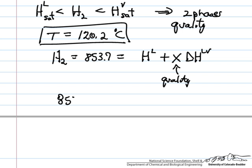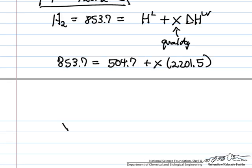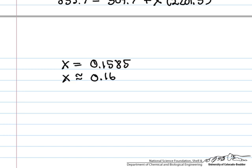So 853.7 equals 504.7. That's the enthalpy of the liquid. And then the enthalpy change such that if we now solve this for X, 0.1585. So X is about 0.16. So that means the effluent from the throttle is 16% vapor and 84% liquid.